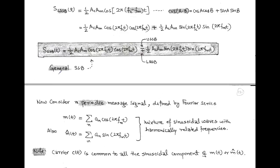In the general SSB wave we have two terms. In the first term the message signal is A_M·cos(2π·f_M·t), and in the second term the message is A_M·sin(2π·f_M·t). On this basis, we consider a message signal that is periodic and a mixture of sinusoidal waves with harmonically related frequencies. We call the message signal containing the cosine term m(t), and the one containing the sine term m̂(t). The periodic message signal defined by Fourier series is: m(t) = Σ aₙ·cos(2π·f_M·t) and m̂(t) = Σ aₙ·sin(2π·f_M·t).